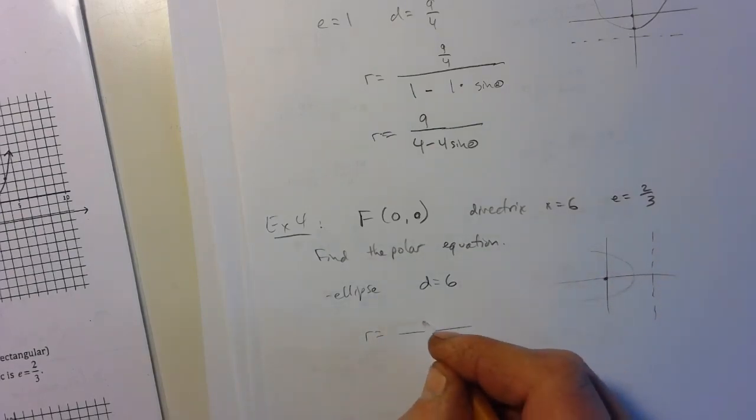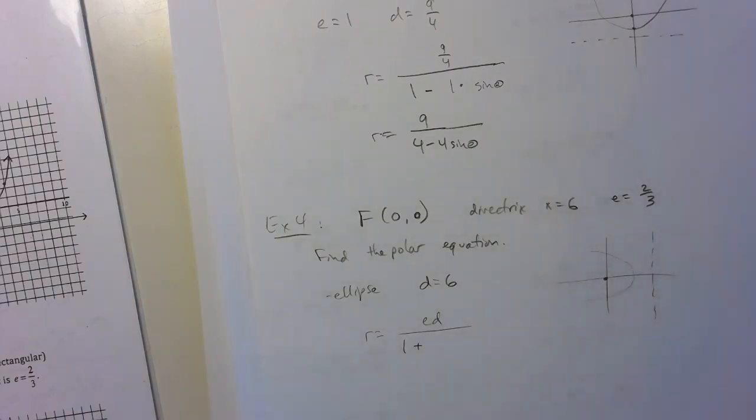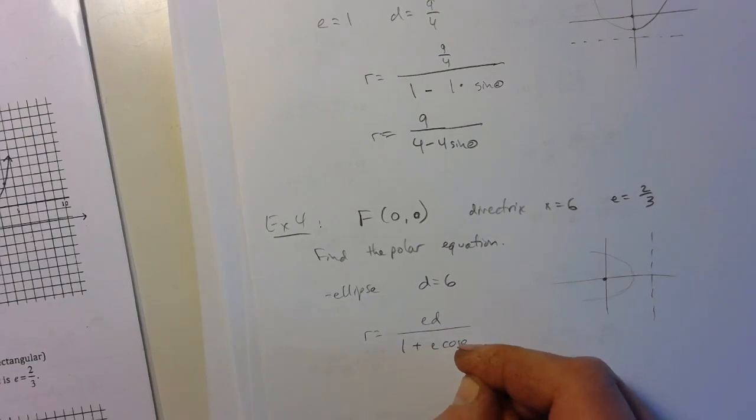So that's going to tell us that we're going to have e, d. This is to the right, so it's going to be, if we're looking at it, let me make sure I have this right, not the correct equation, right? Okay, yep, it's going to be one plus e cosine theta. It's on the right there, okay, for ourself.